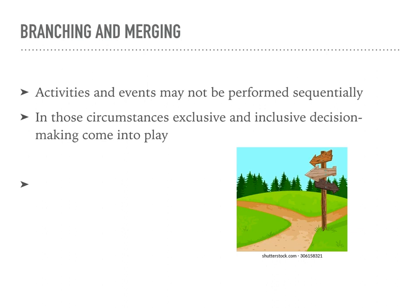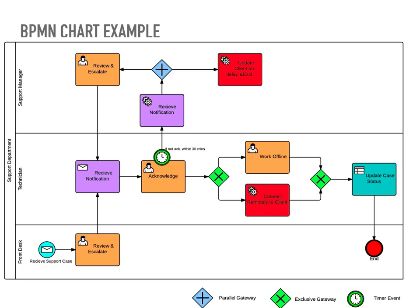In addition to inclusive and exclusive decision making, business process management notation also involves parallel execution, which refers to the ability to perform multiple tasks or activities simultaneously within a process. In BPMN, parallel execution is typically represented using parallel gateways — diamond-shaped symbols. When a process reaches a parallel gateway, it splits into multiple concurrent paths, and each path represents a separate activity or task. These activities can be executed simultaneously without being dependent on each other's completion. Parallel execution is useful in scenarios where certain tasks can be performed independently or in parallel, leading to faster completion times. It helps maximize resource utilization and can improve overall process efficiency.